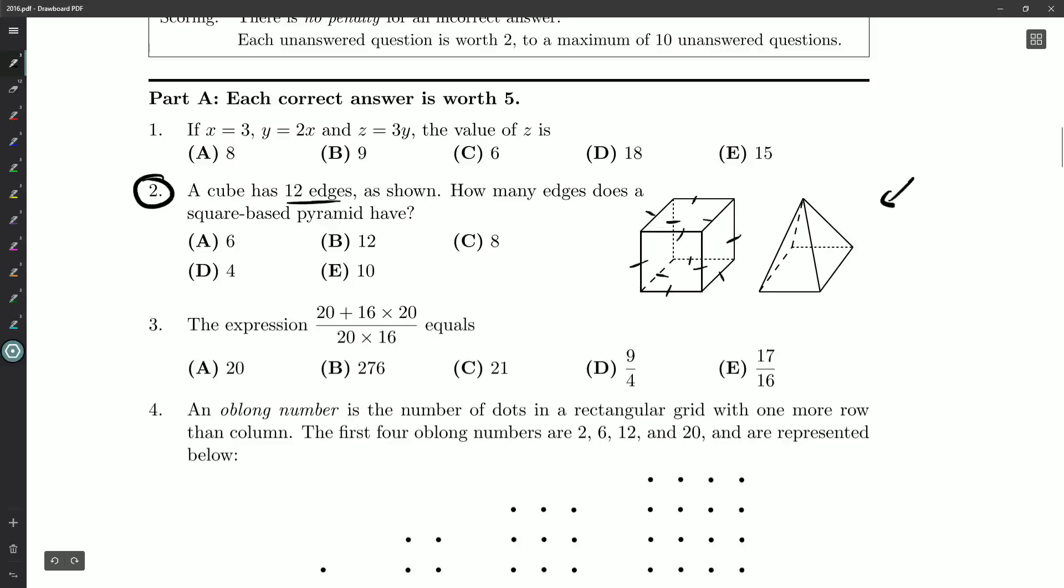Okay, well, we've got a square-based pyramid right here. We could count them. One, two, three, four. So four of them going up to the point, and then one, two, three, four along the base. That's just going to be a total of eight.